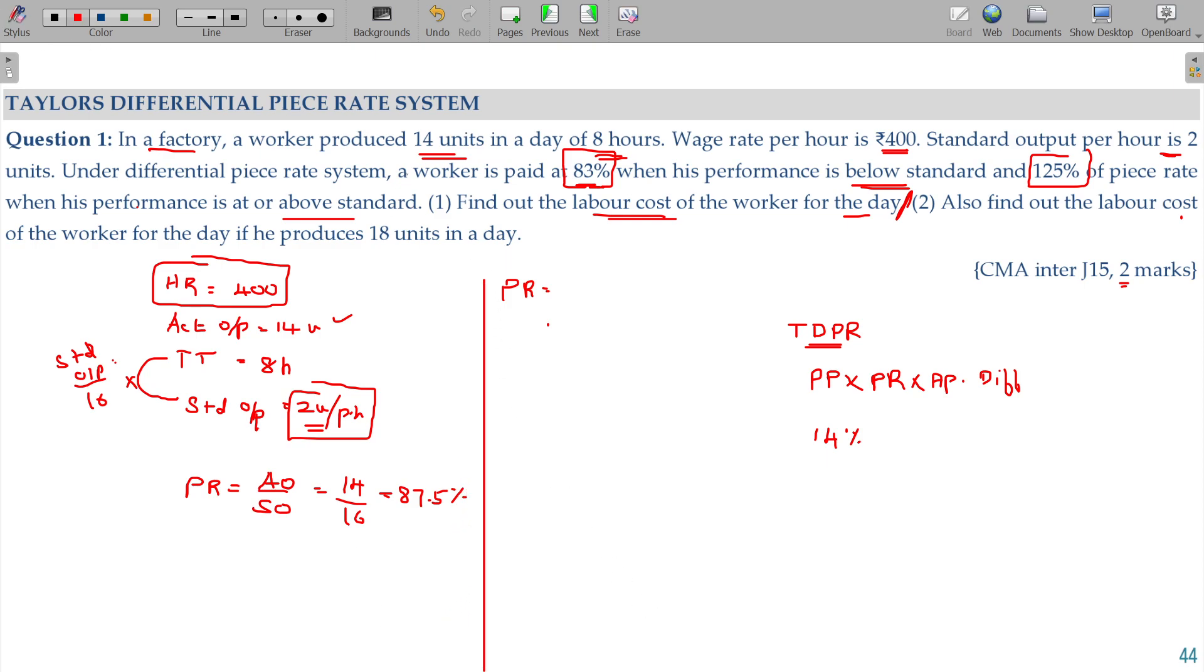What is that formula? Hourly rate divided by standard output per hour. Hourly rate is 400 divided by 2. The piece rate is 200 rupees. That is how you can get the piece rate.